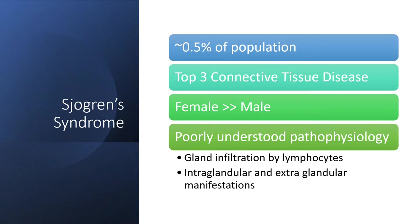It is much more common in females than males, and overall why it happens is not very well understood. We do know that lymphocytes, which are a type of white blood cell, infiltrate and take over the space of glands in the body — saliva glands and that sort of thing — but it can be a disease affecting both glands and parts of your body outside of your glands, extra-glandular as well.